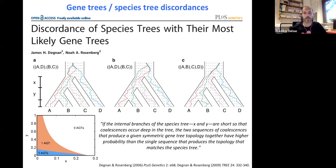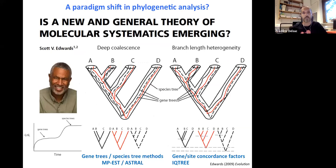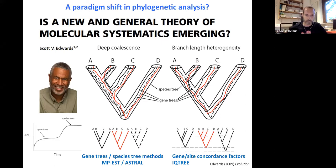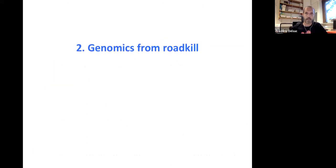At that time, concatenation was also shown to be inconsistent in the presence of really short branch lengths because of deep coalescence events leading to gene tree heterogeneity. This led to a kind of paradigm shift in phylogenetic analysis, as detailed by Scott Edwards in the preceding symposium on phylogenetic methods. People are now really acknowledging the heterogeneity in gene trees and trying to reconstruct a species tree using methods such as gene tree–species tree methods with software like MP-EST or ASTRAL, or by looking at gene and site concordance factors as implemented in IQ-TREE.